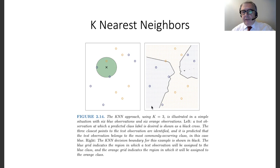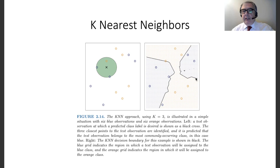I can repeat this procedure for all points in the plane using a grid. For each grid point I take the three nearest neighbors — the smallest neighborhood including three points — count the orange and blue labels, and color the grid point accordingly. The result is an orange region for points classified as orange and a blue region, which may be divided into parts, for points classified as blue. The method is really a simple one.